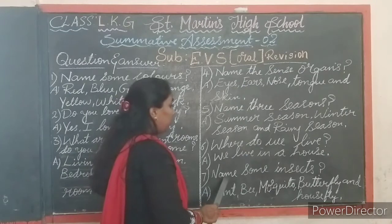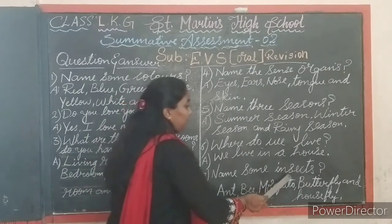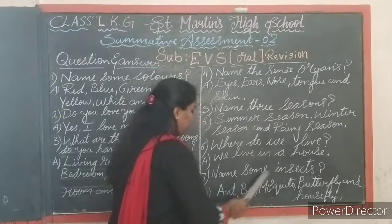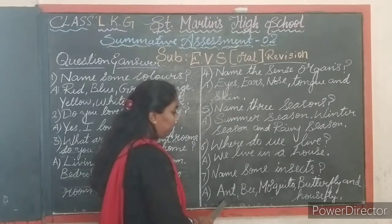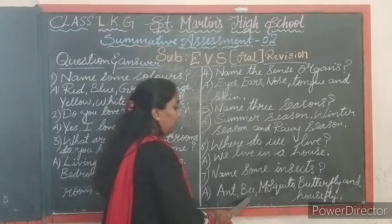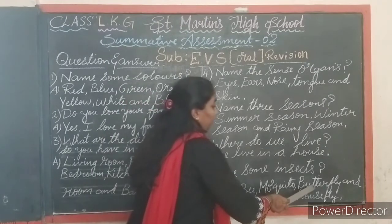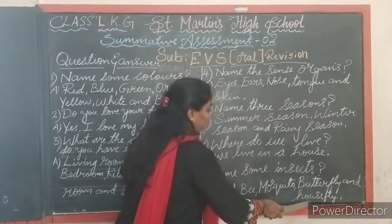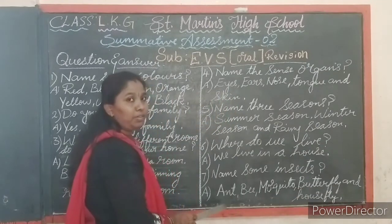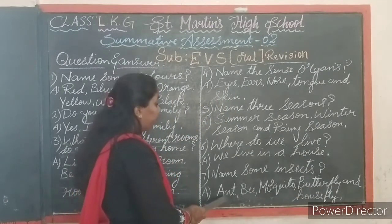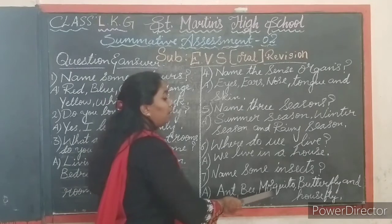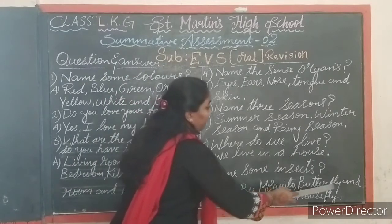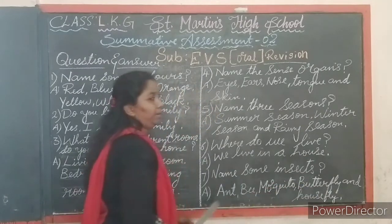Next question: name some insects. Answer — ant, bee, mosquito, butterfly and housefly. Tell me children — ant, bee, mosquito, butterfly and housefly.